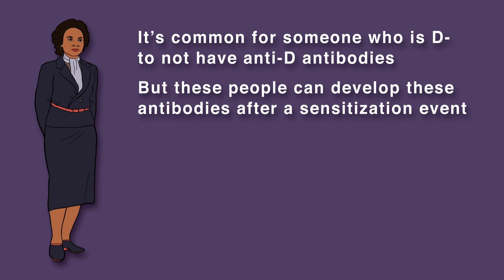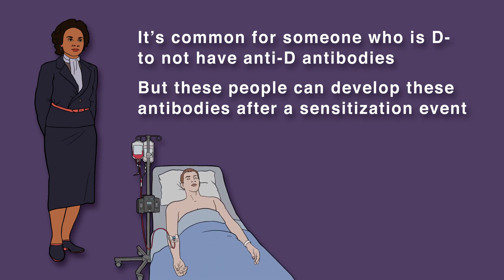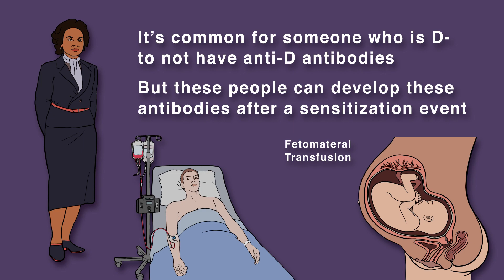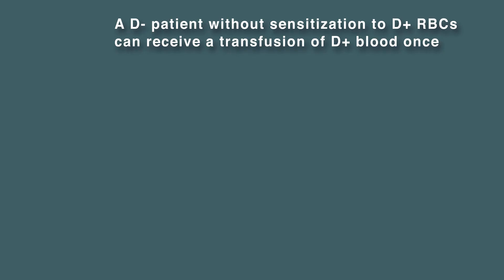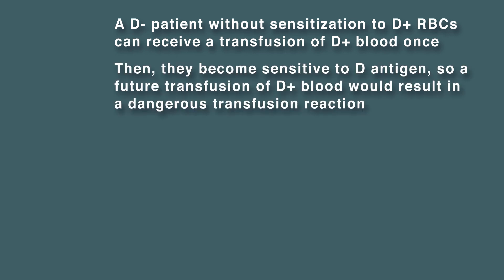Sensitization can happen during a blood transfusion, or during a fetomaternal transfusion of blood during pregnancy, and can result in the development of RH disease. A D negative patient without sensitization to D positive red blood cells can receive a transfusion of D positive blood once. Then they become sensitive to D antigen, so a future transfusion of D positive blood would result in a dangerous transfusion reaction.